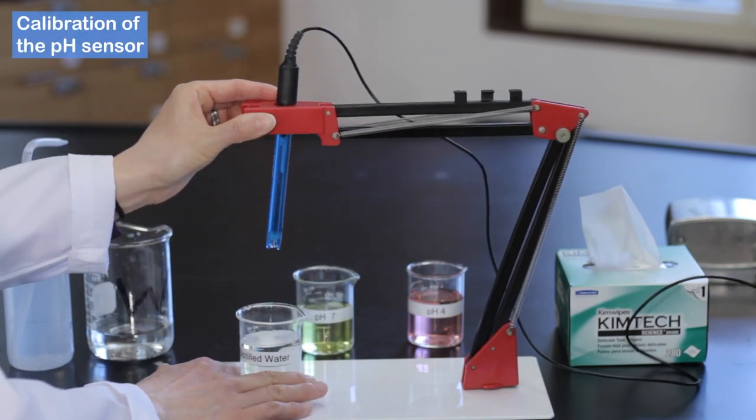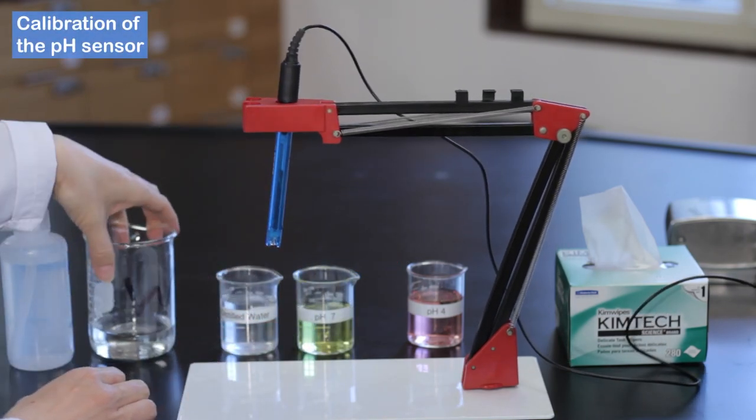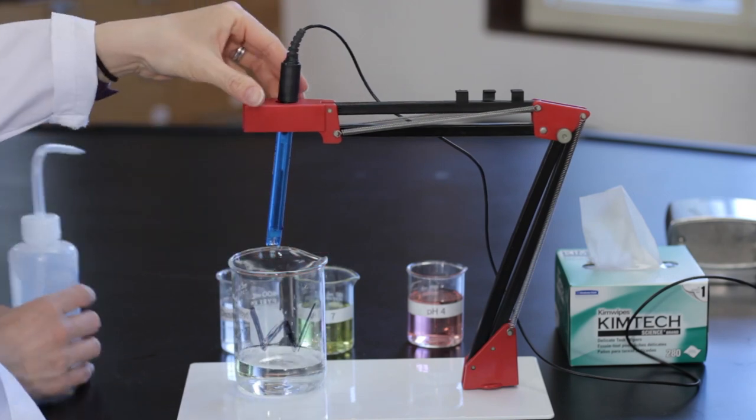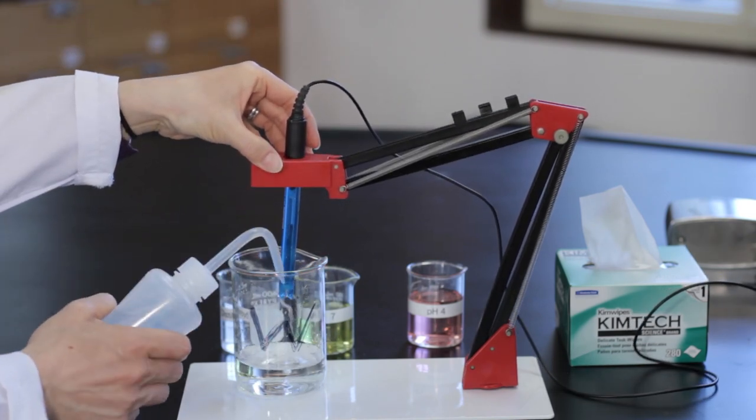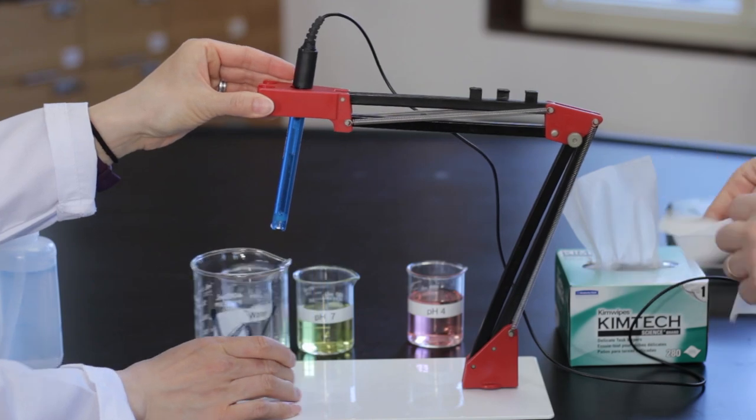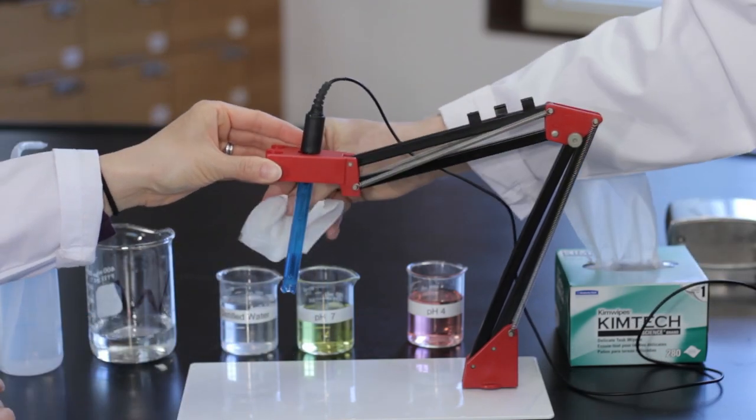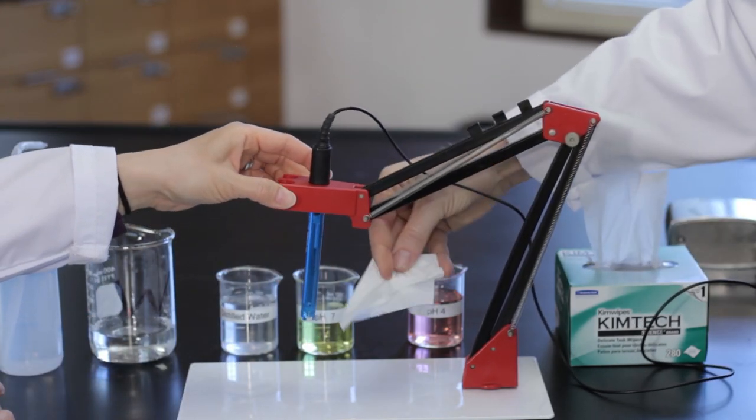To calibrate the pH sensor, rinse the pH sensor with distilled water. Do not collect the rinsings in the distilled water beaker; instead, the rinsings should be collected in a waste beaker. Wipe the pH sensor with a Kimwipe.